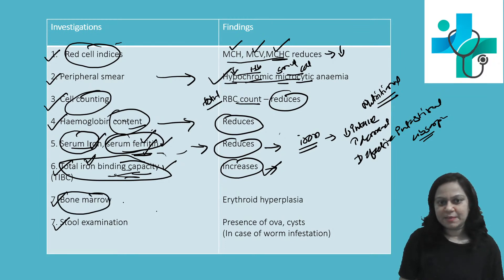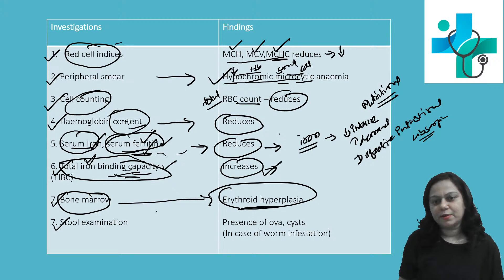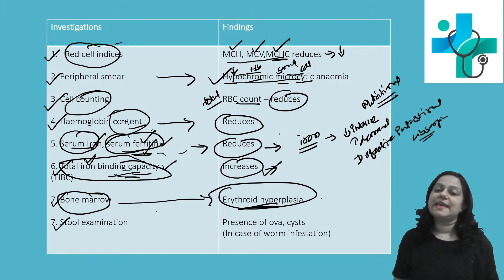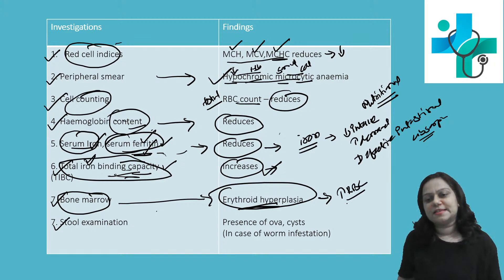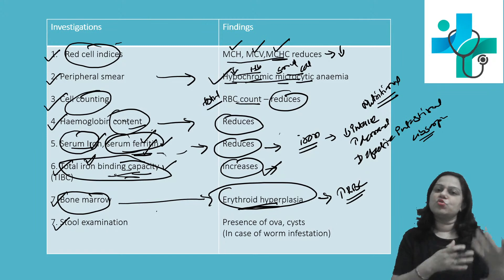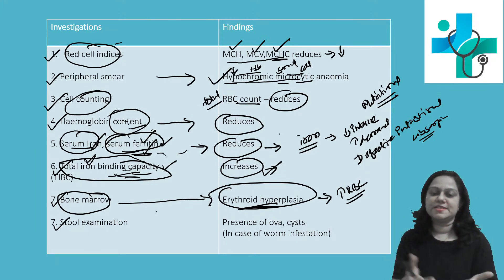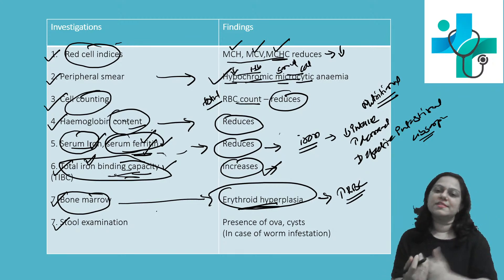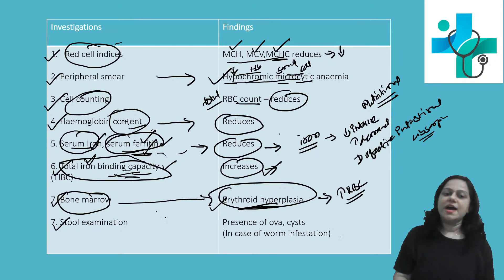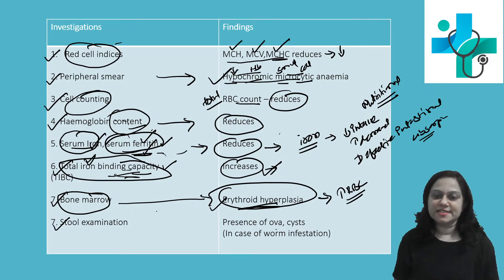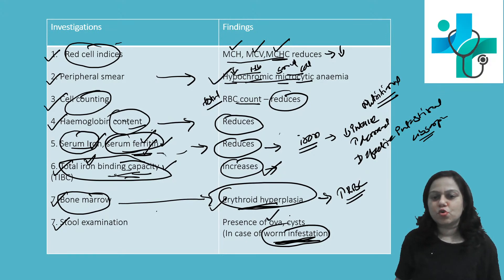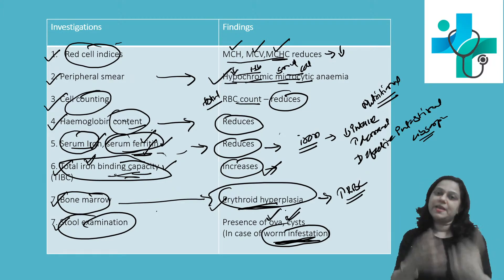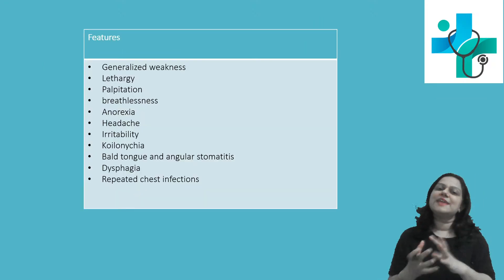If you go for bone marrow examination, it will show erythroid hyperplasia, because the bone marrow tries to compensate for the anemia by diverting stem cells towards formation of more and more RBCs. If iron deficiency anemia is due to worm infestation, on stool examination you will find presence of ova or cyst. So these are the lab investigations.